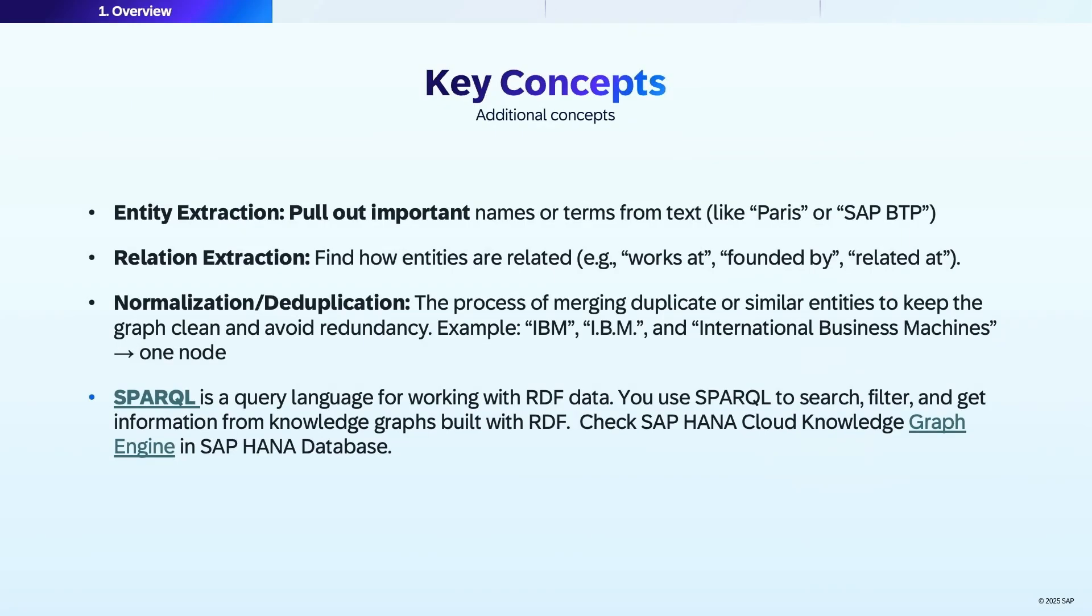Entity extraction means to pull out important names or terms from the text, like Paris or SAP BTP. Relationship extraction is about finding how entities are related, for example, works at, founded by, or related to.